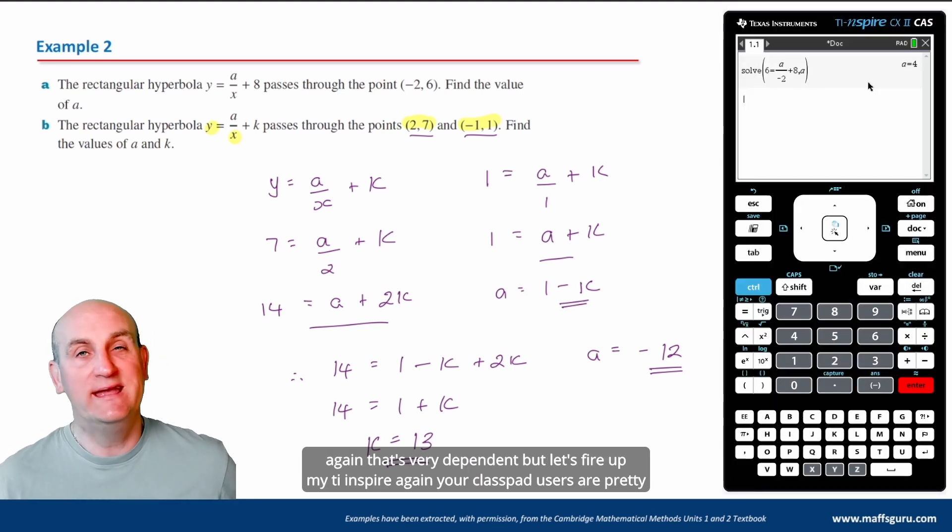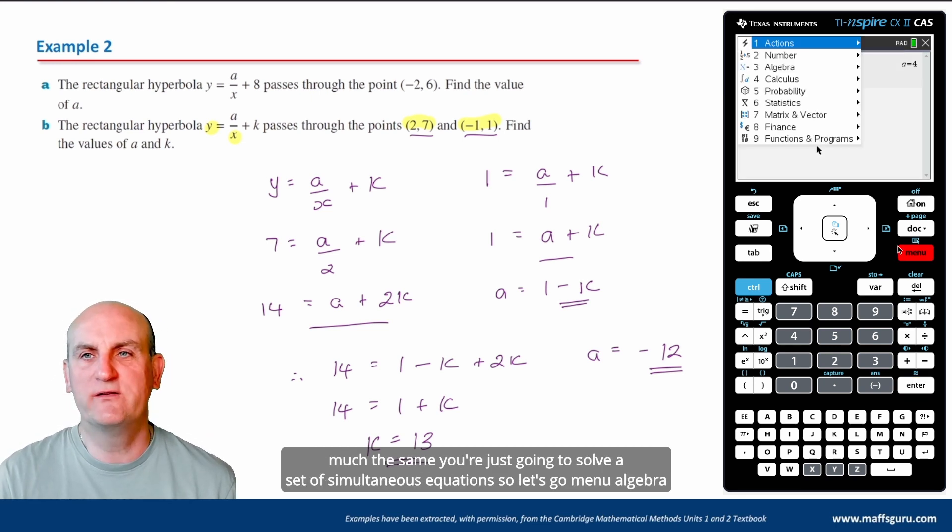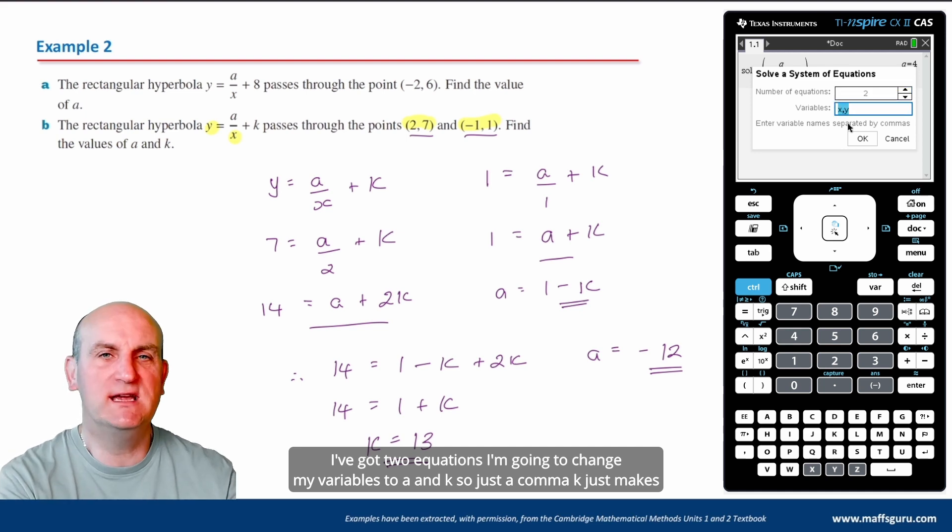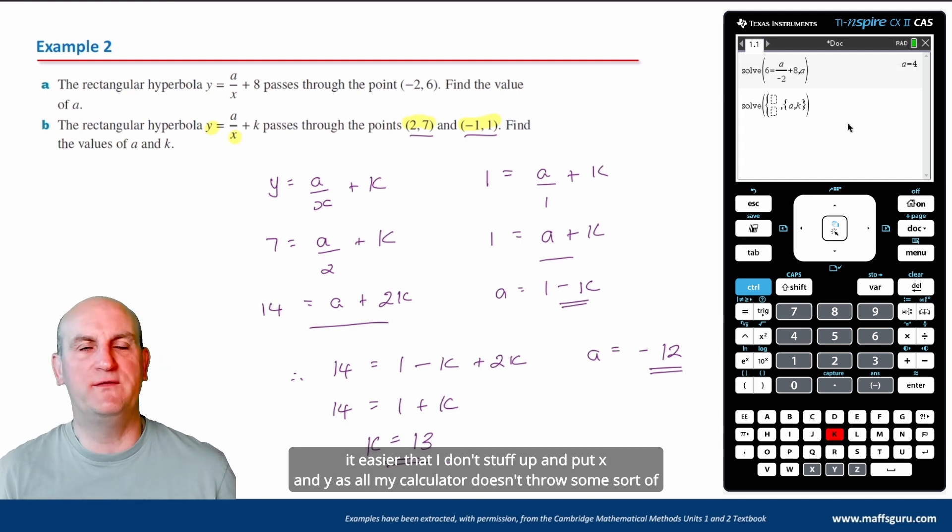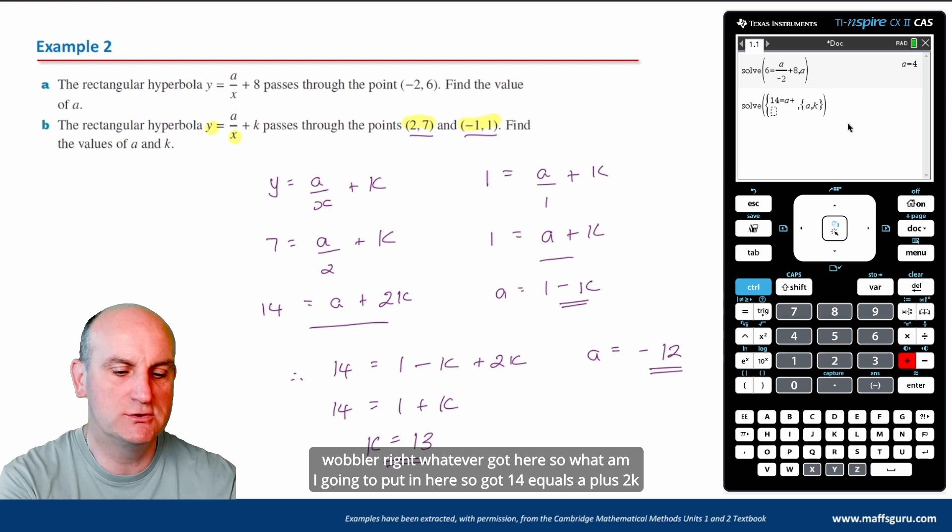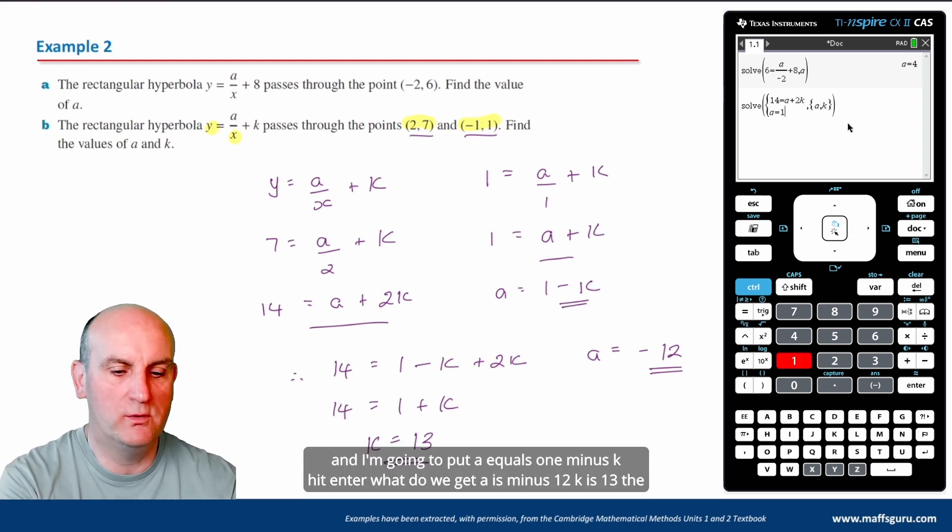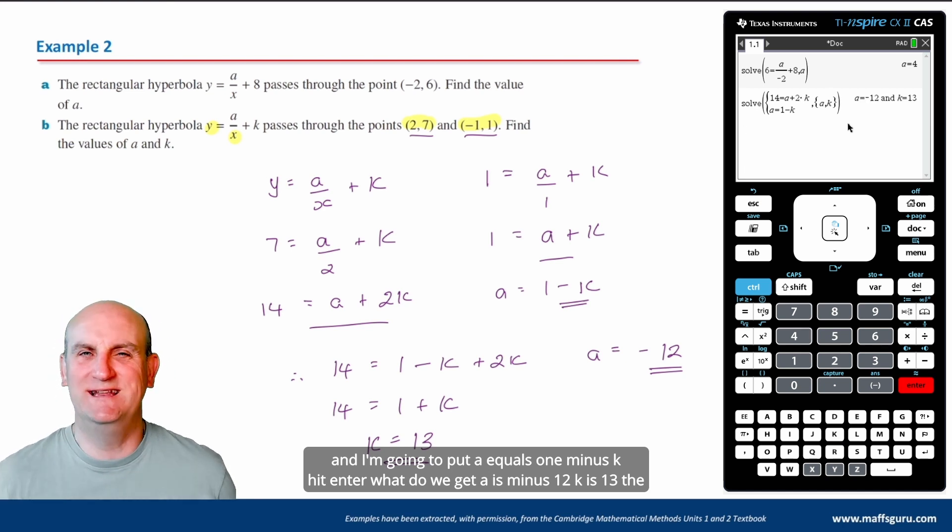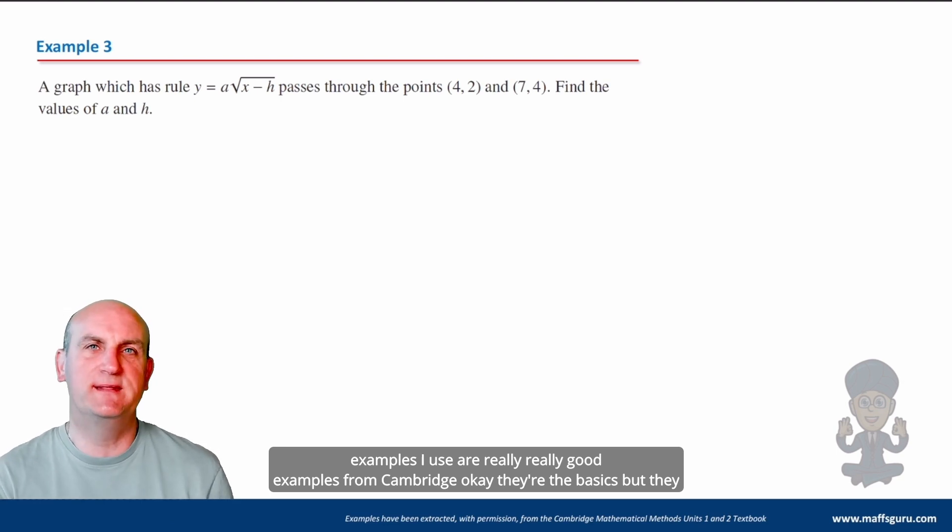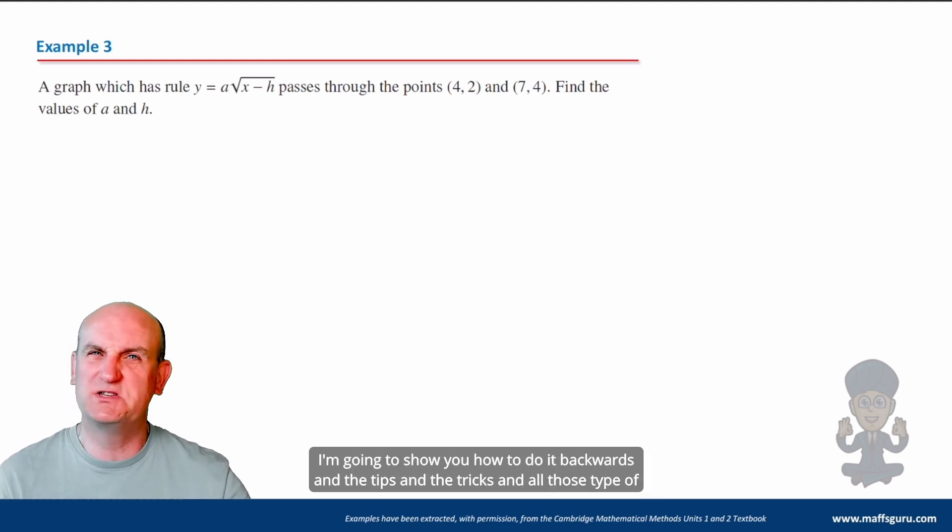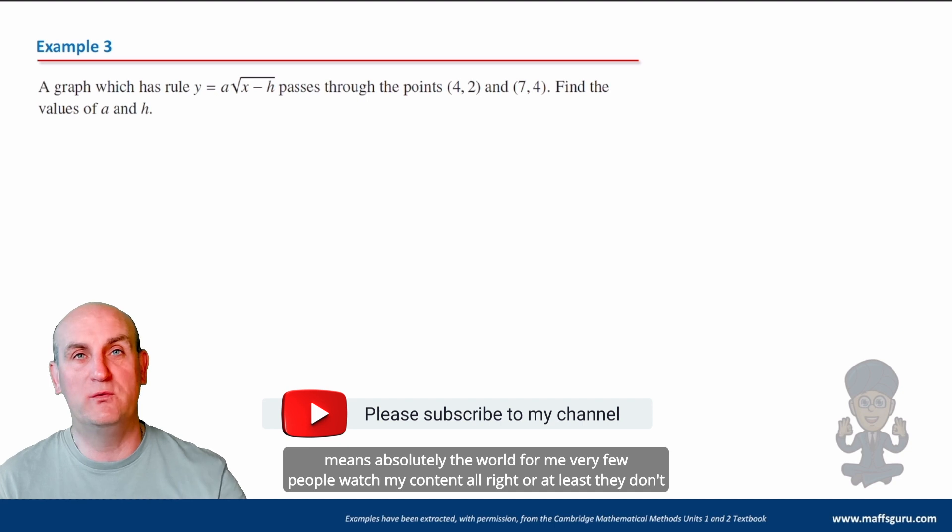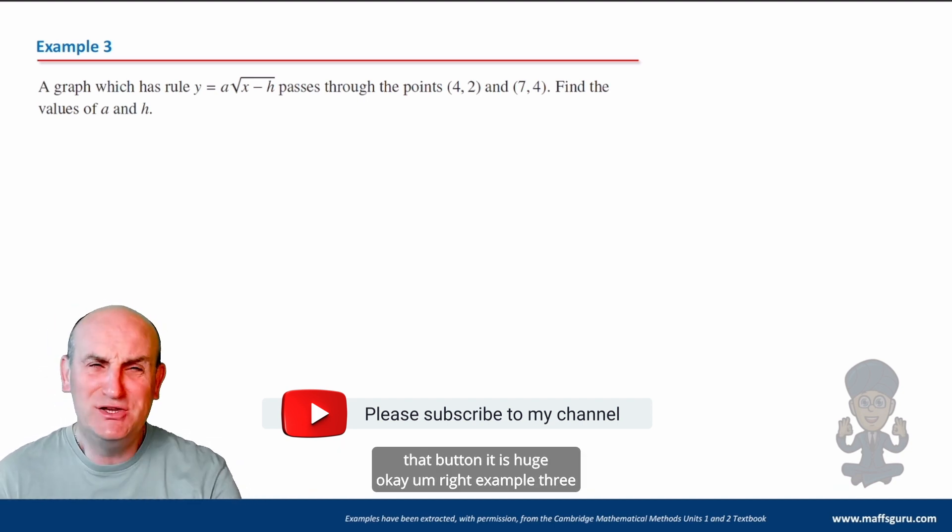But let's fire up my TI Inspire. Again, your Classpad users are pretty much the same. You're just going to solve a set of simultaneous equations. So let's go menu, algebra, solve a system of equations. How many equations have I got? I've got two equations. I'm going to change my variables to a and k. So just a comma k just makes it easier that I don't stuff up and put x and y's or my calculator doesn't throw some sort of a wobbler. Right. What have I got here? So I've got 14 equals a plus 2k. And I'm going to put a equals 1 minus k. Hit enter. What do we get? A is minus 12, k is 13. The world goes crazy. And again, I'm going to say this over and over again throughout this course. The examples I use are really, really good examples from Cambridge. Okay. They're the basics, but they show you the fundamentals. And where I can with some of these lessons, I'm going to go deep. I'm going to show you how to do it backwards and the tips and the tricks and all those type of things. But if you can, please subscribe to my YouTube channel. That one little click from you means absolutely the world for me. Very few people watch my content. Or at least they don't tell me they watch my content. So if you can click that button, it is huge.